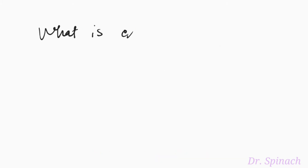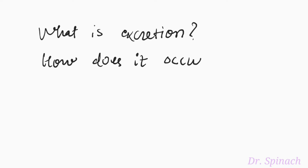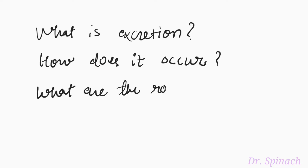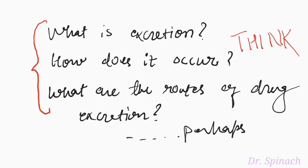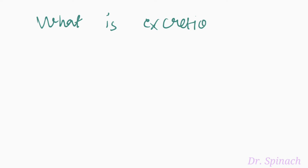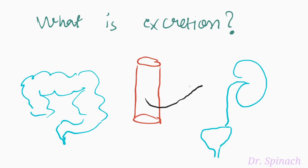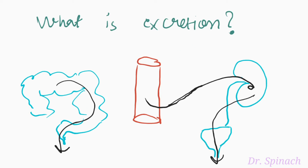So, what is excretion, how does it occur, and what are the routes through which a drug can excrete out of the body? Think about these questions. I am sure at least two routes of excretion came up in your mind — that is through urine and through feces. Congratulations, very well done. Now let's begin with our first question on the definition of excretion. Excretion is defined as the passage out of a systemically absorbed drug.